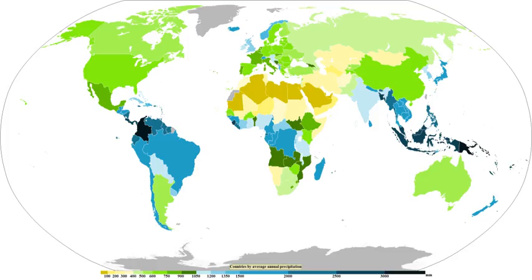Those bands bring strong localized snowfall, which can be understood as follows: large water bodies such as lakes efficiently store heat, resulting in significant temperature differences larger than 13°C (23°F) between the water surface and the air above. Because of this temperature difference, warmth and moisture are transported upward, condensing into vertically oriented clouds which produce snow showers. The temperature decrease with height and cloud depth are directly affected by both the water temperature and the large-scale environment.